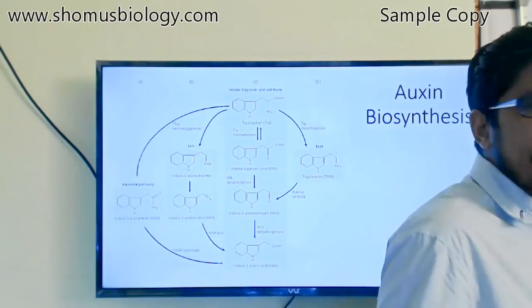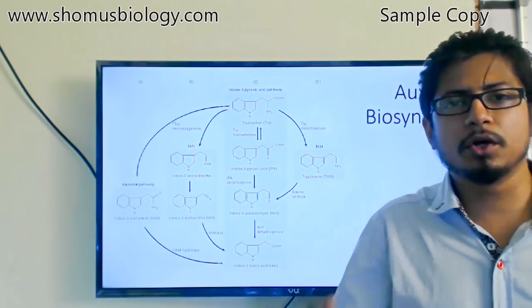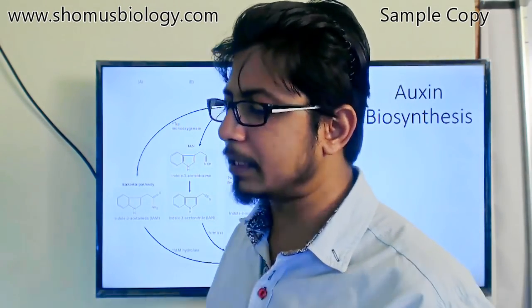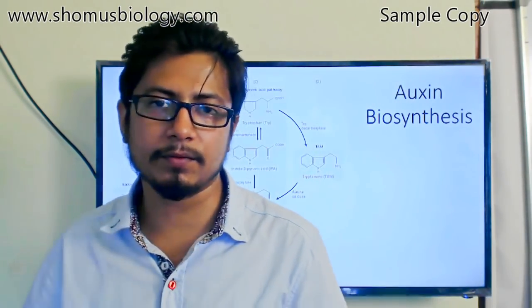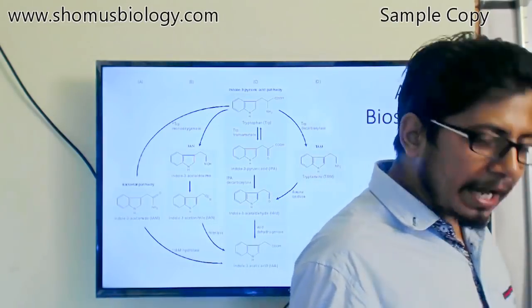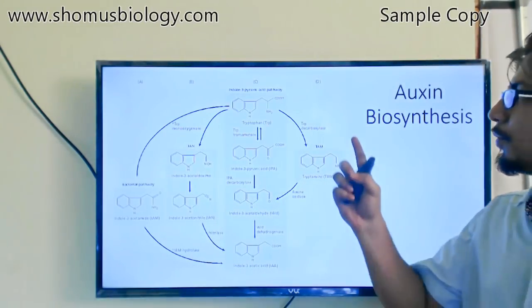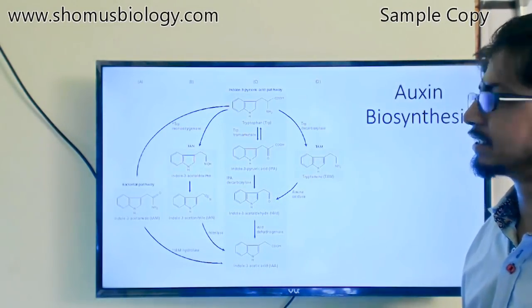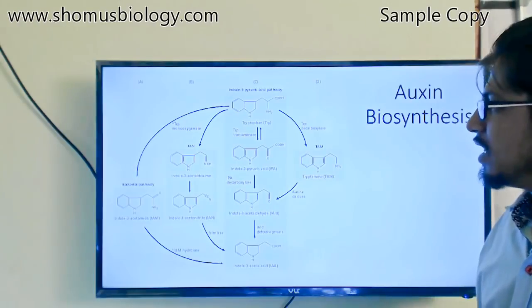Now, how exactly is auxin hormone produced? The biosynthesis pathway of auxin involves the indole-C pyruvate acid pathway.